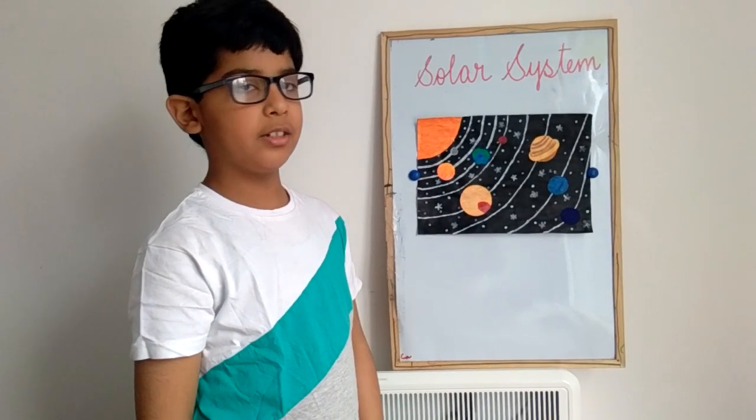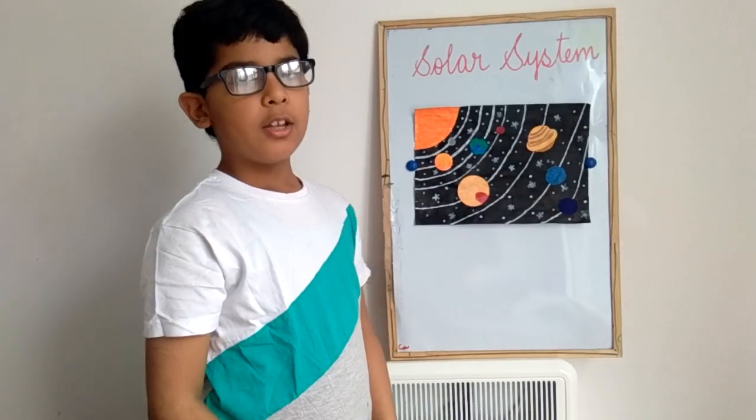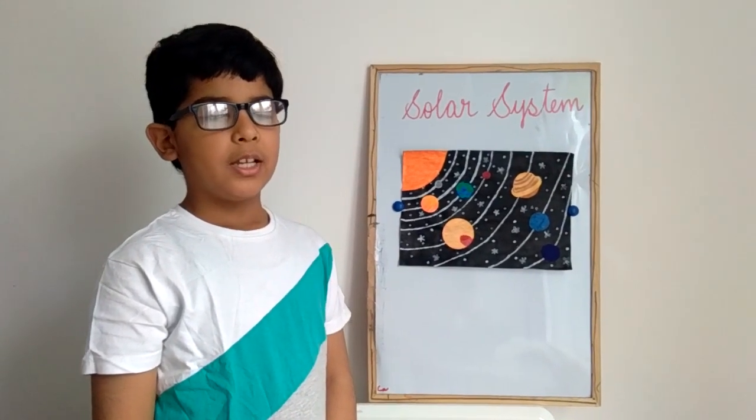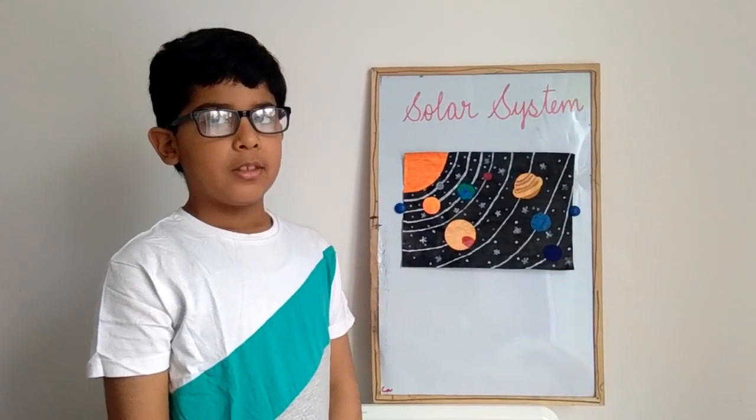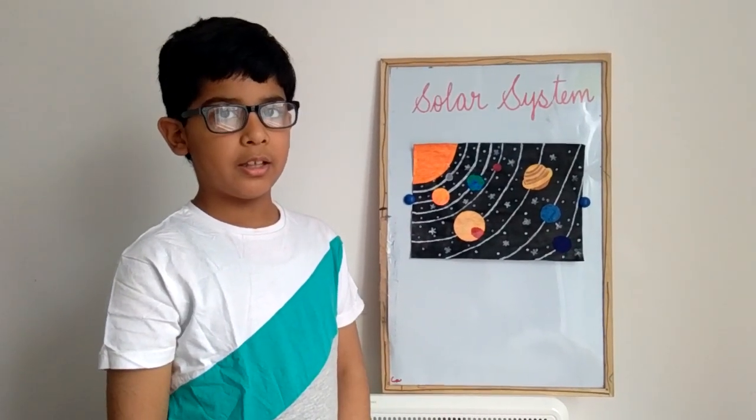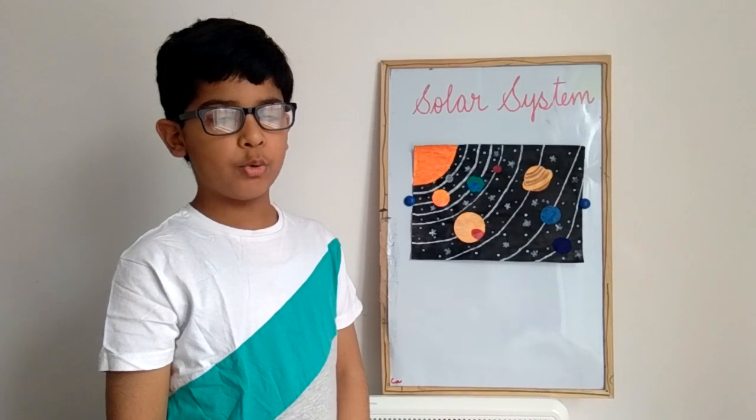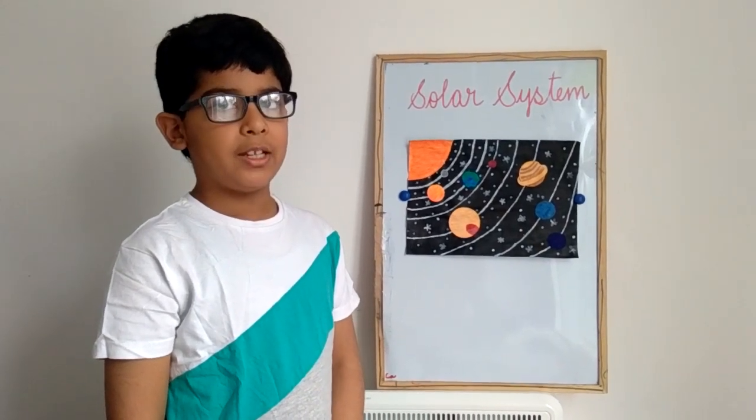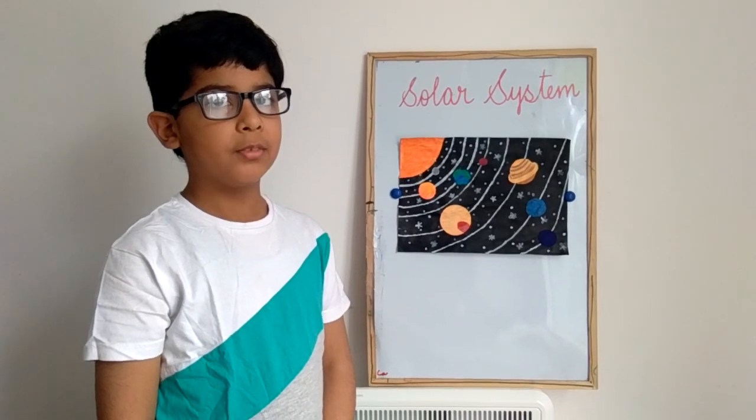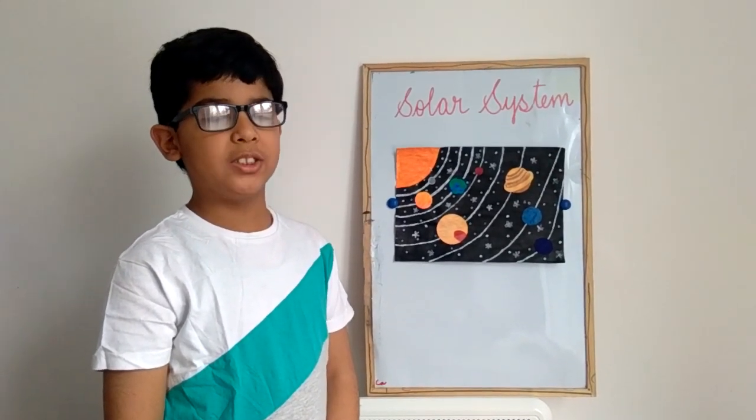The next planet is Venus. Venus is the hottest planet in our solar system. It is similar in size to Earth. We can often see Venus just after sunset. It also has zero moons.